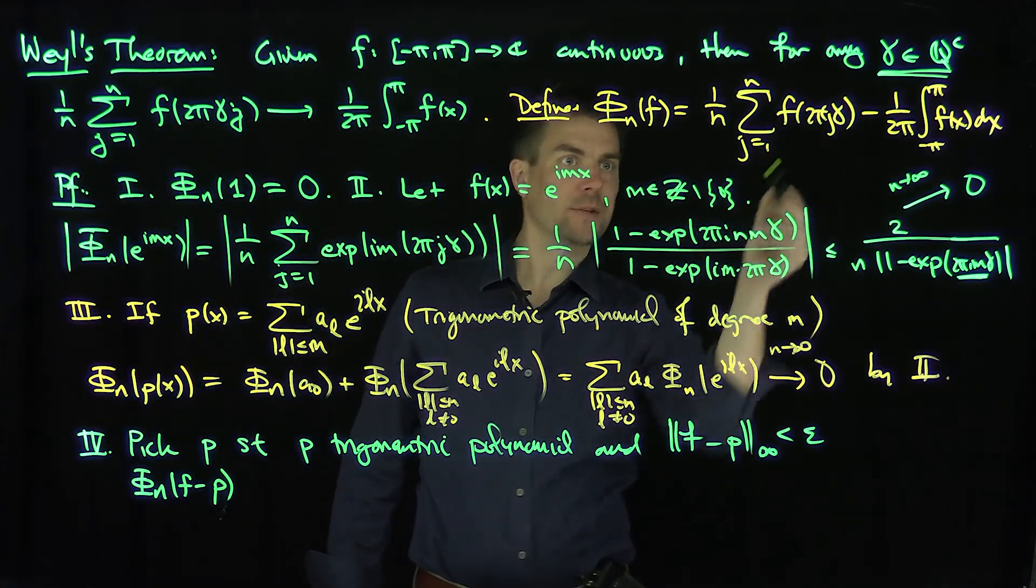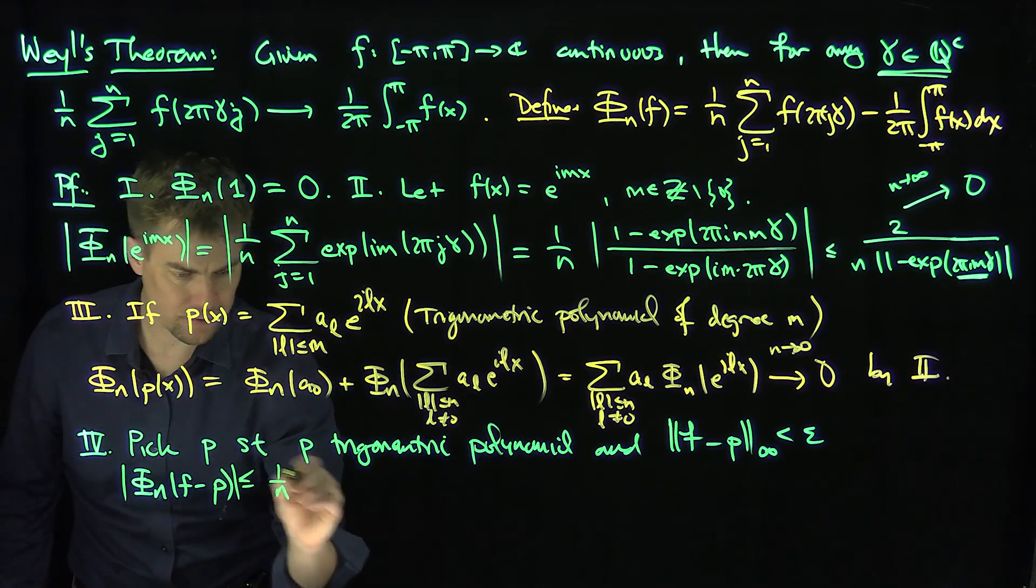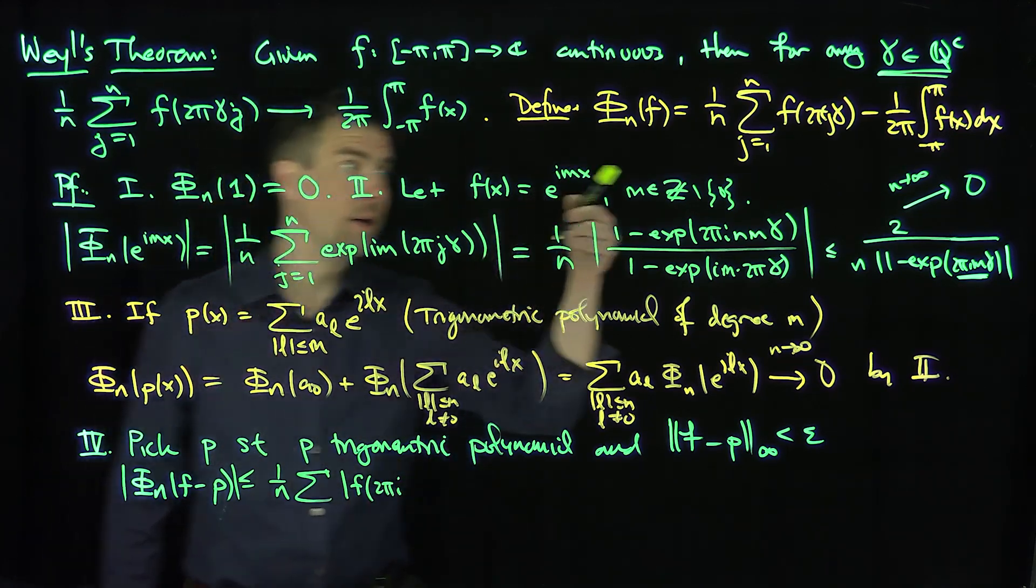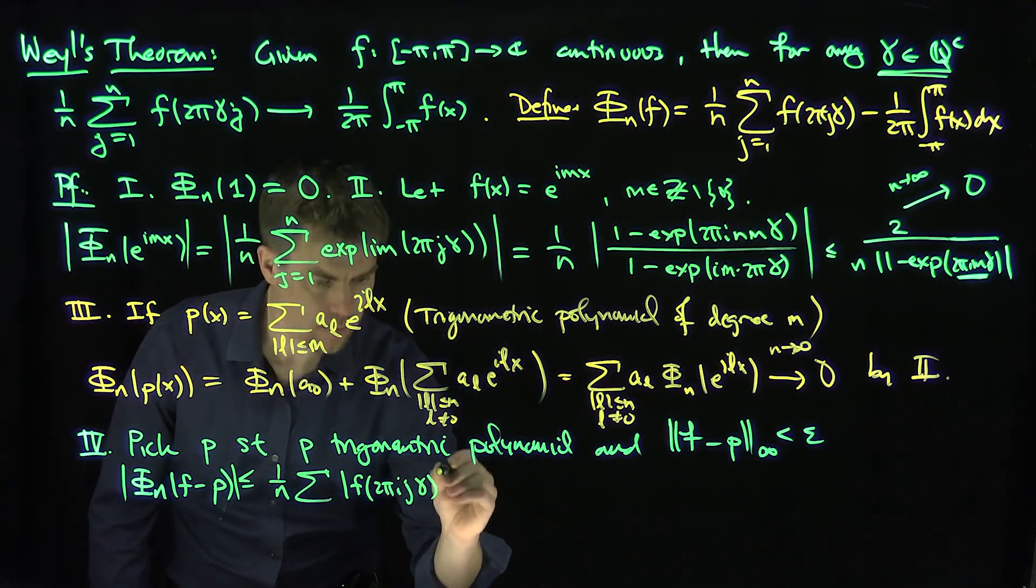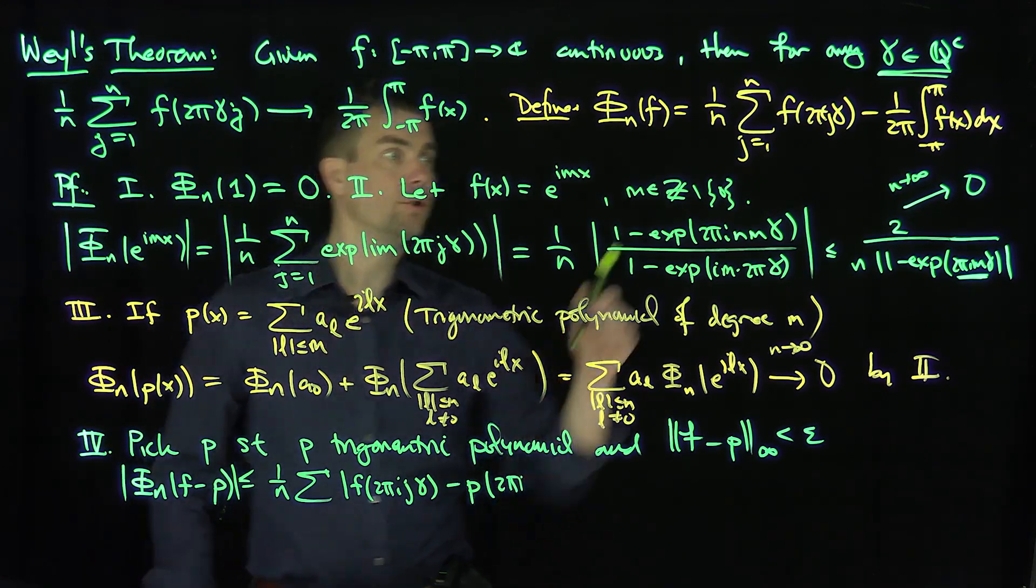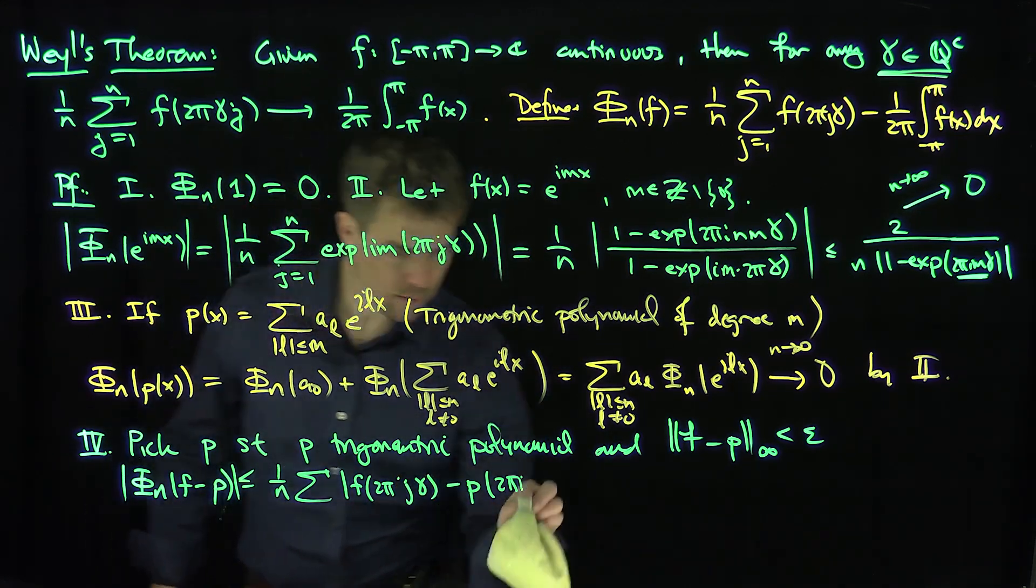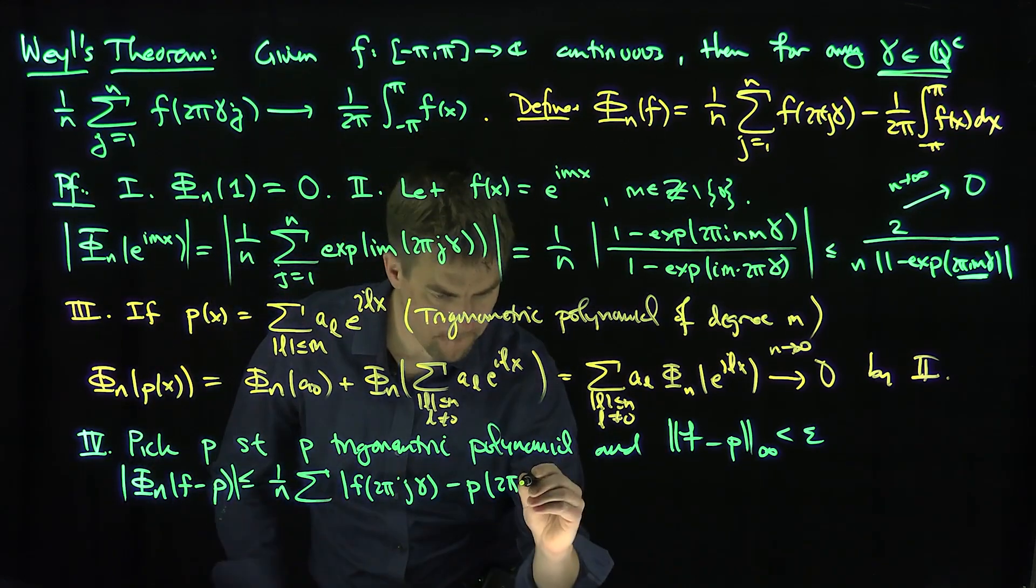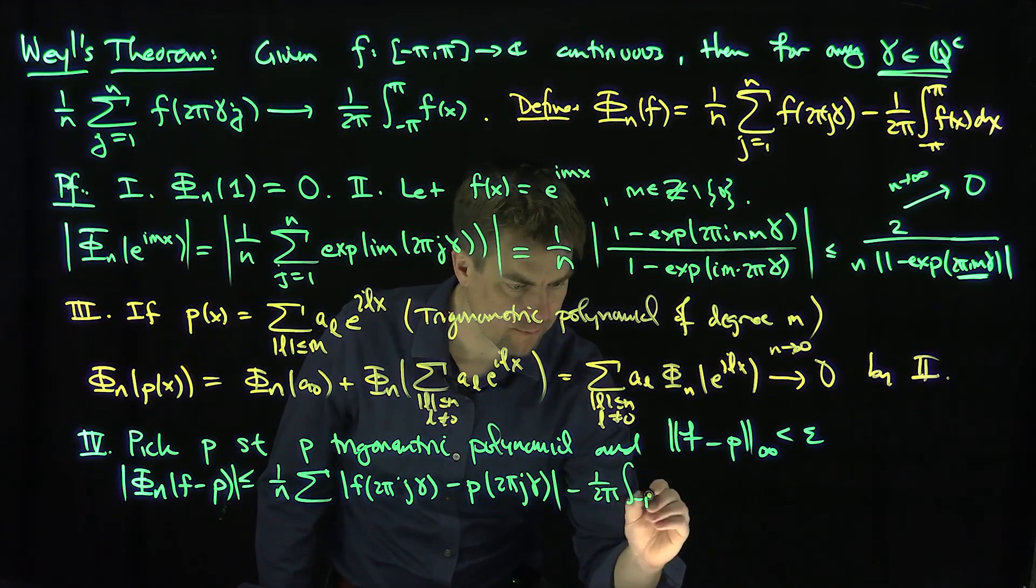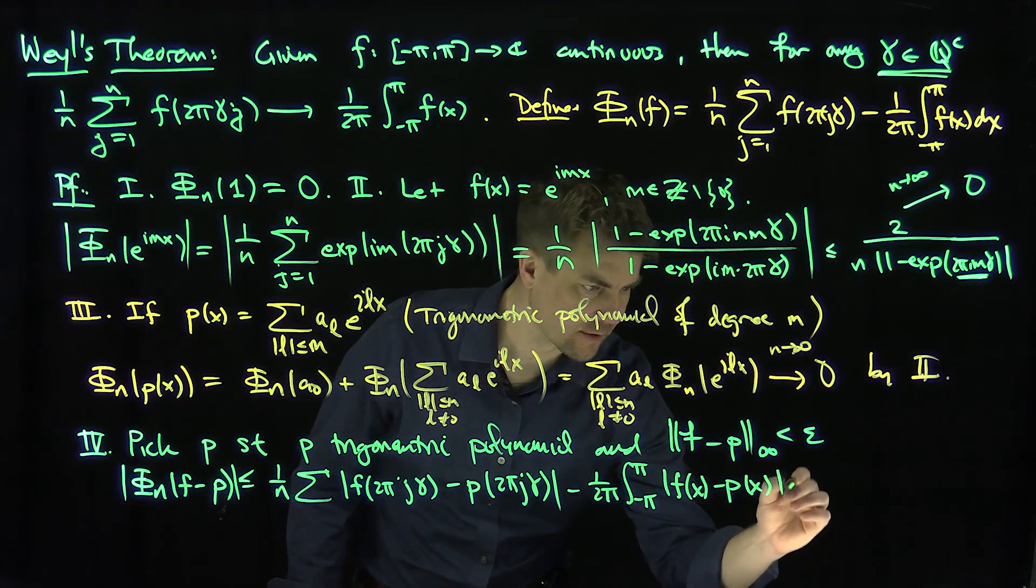Well, we have two things over here. We have the sum of f minus p on these points over here, so this is going to be 1 over n, less than or equal to the sum j from 1 to n of f of 2πjγ minus p of 2πjγ, and then minus 1 over 2π, the integral from negative π to π, of f of x minus p of x dx.